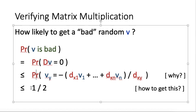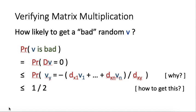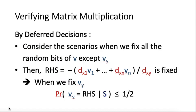We claim that this probability is less than or equal to 1 over 2. To get this, we are using deferred decisions to help. We now consider the scenarios for our case, we fix all the random bits of V. Recall that V is a random vector. We fix all the random bits of V except Vy first. All the random bits except Vy are now fixed.